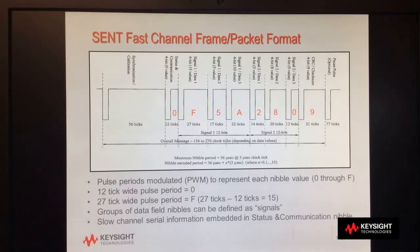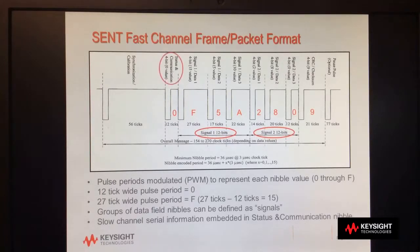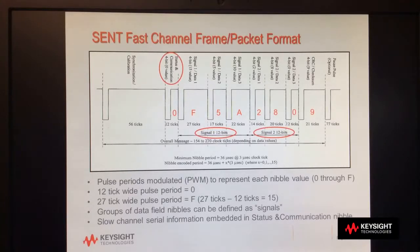Also, data fields can be grouped into signals, which would typically represent a physical value such as temperature or pressure. And lastly, the status and communication nibble can have embedded in it what's called slow channel serial data, which is accumulated over several transmissions of fast channel packets. Unfortunately, we can't go into this topic any deeper in this short video, so please read the CENT specification if you want to learn more. But I will show decoded results of slow channel data on the oscilloscope in just a minute.